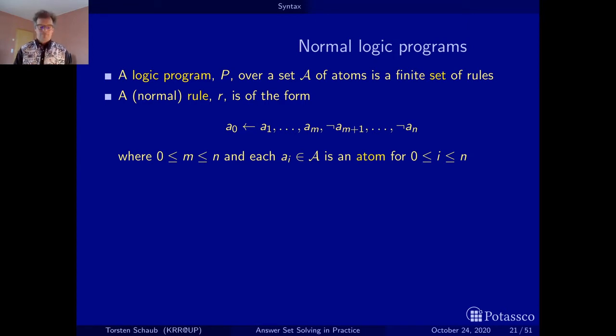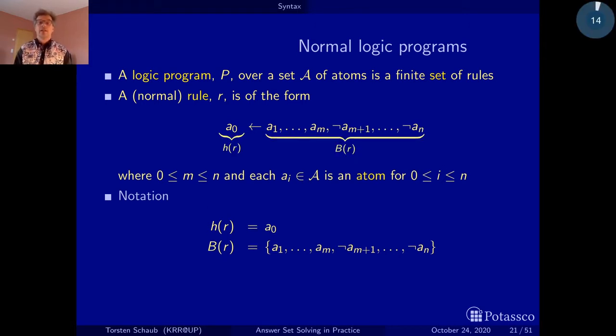The idea is to define functions that give us access to the components of the rules. So if we have our rule that we abbreviate with lowercase r, the obvious functions we want are those that give us access to the head and the body of the rule. So we use lowercase h to give us the head and uppercase B to give us the body, visualized here. See that I use a lowercase letter to denote a single object, and whenever it's an uppercase letter, it's a set of objects. The body is a set. So it doesn't matter in which order you wrote down the body literals.